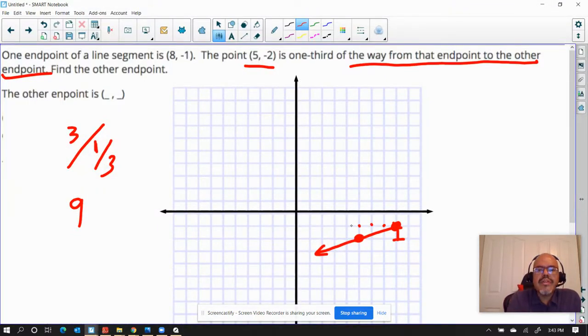So 1, 2, 3, 4, 5, 6, 7, 8, 9. So that brings us to negative 1. So part of the coordinates are negative 1. Now we just need the other coordinates.